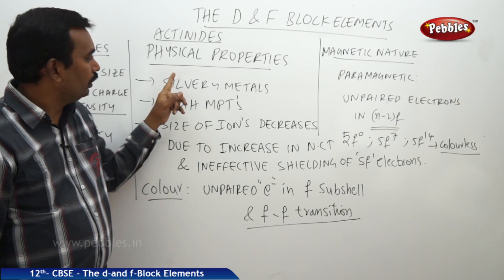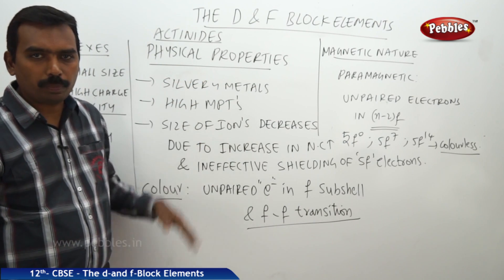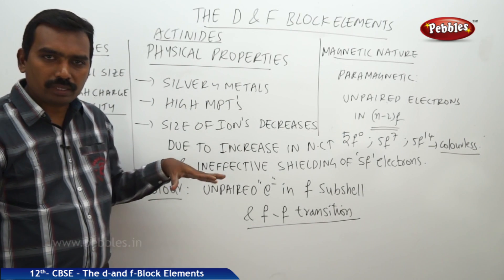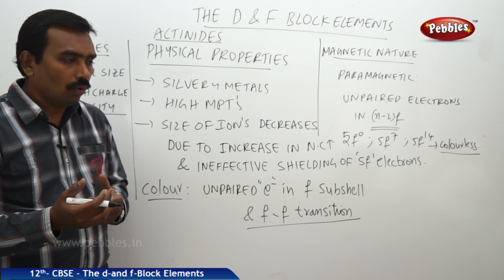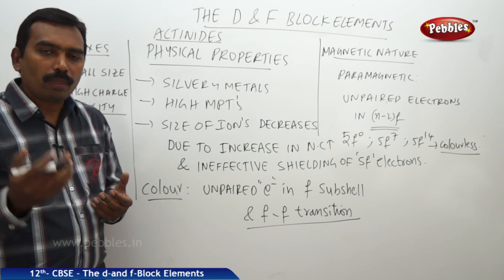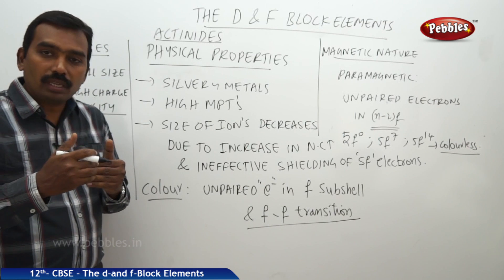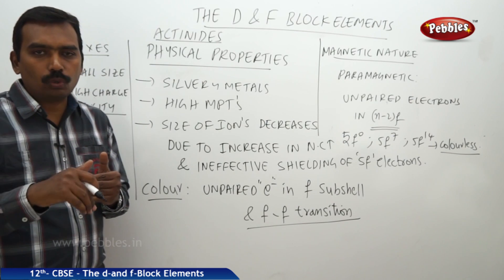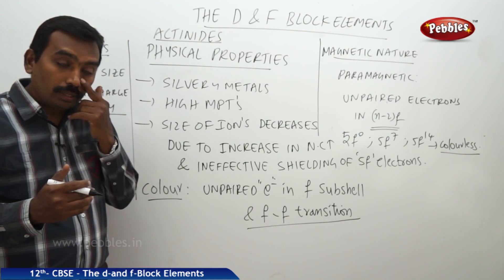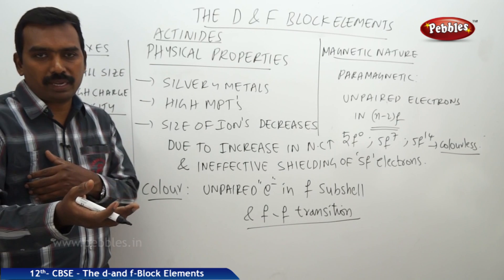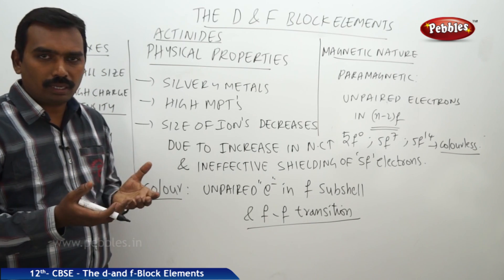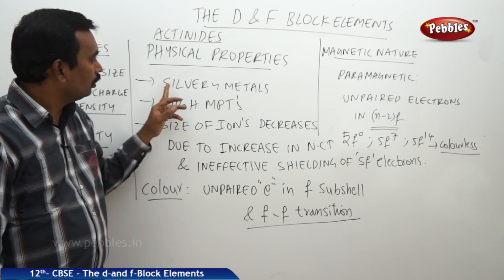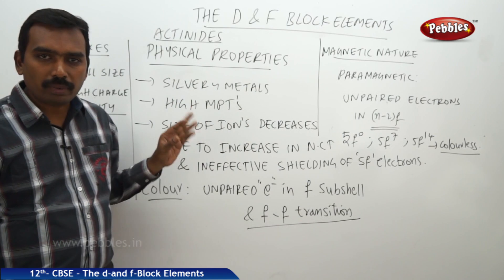Looking at the physical properties of actinides: they are silvery metals with a shining, lustrous nature. They are lustrous because when light falls on these actinides, the electrons get excited to a higher energy level and then undergo de-excitation. During de-excitation, the absorbed energy is emitted back as light, which we see as the lustrous or shiny nature.